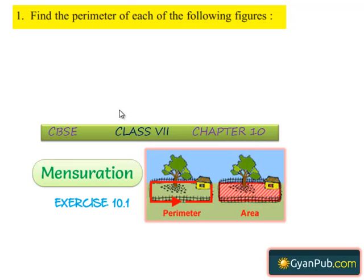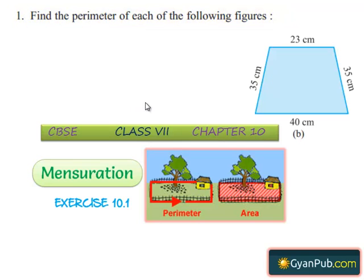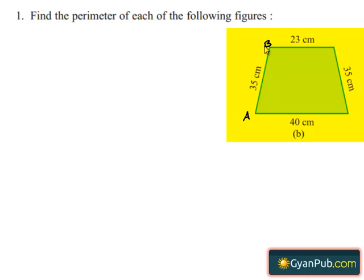Moving on to the first question in the first exercise, given to find the perimeter of each of the following figures. Moving on to the second figure, let us denote the sides with A, B, C, and D.